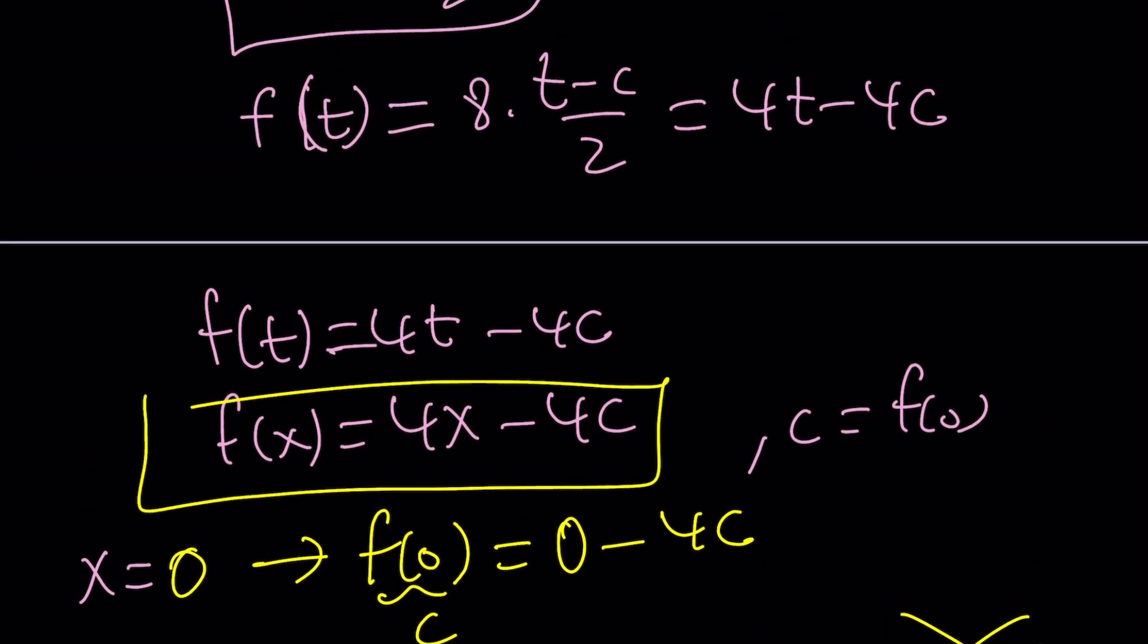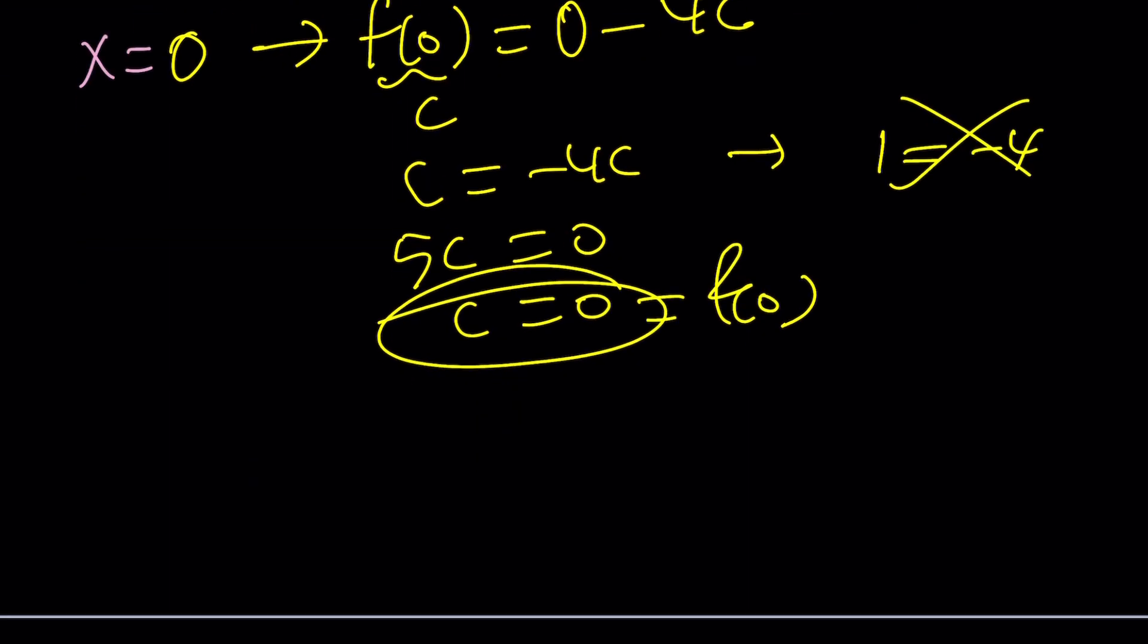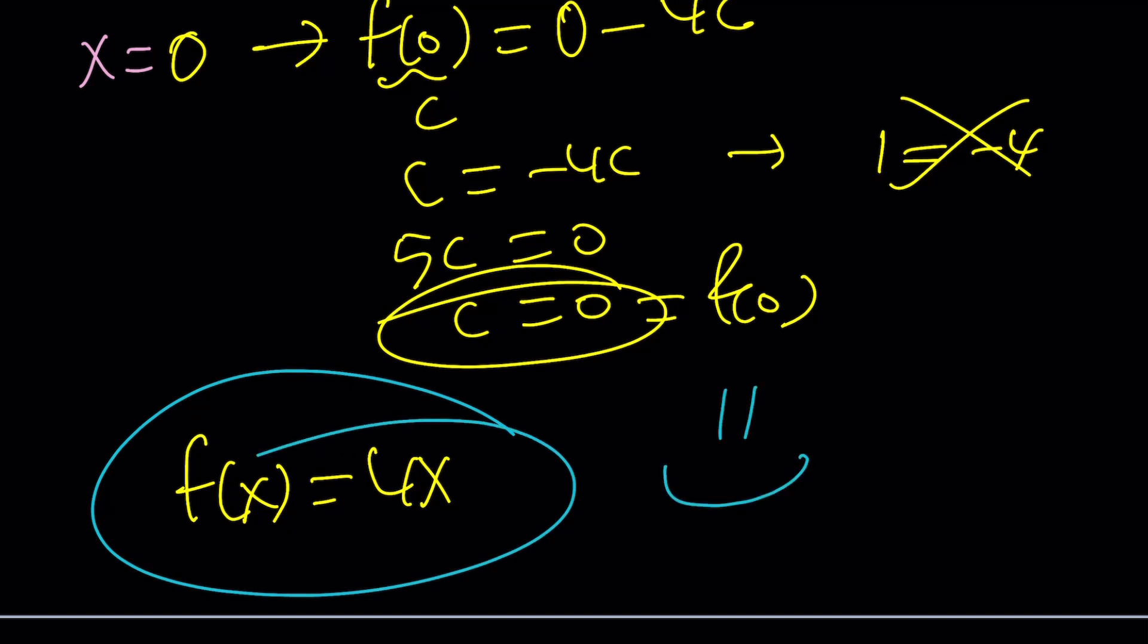We had a c that needs to disappear. So, since my function was written as f of x equals 4x minus 4c, f of x is just going to be 4x and that just agrees with the first method. Of course, it should. And this brings us to the end of the video.